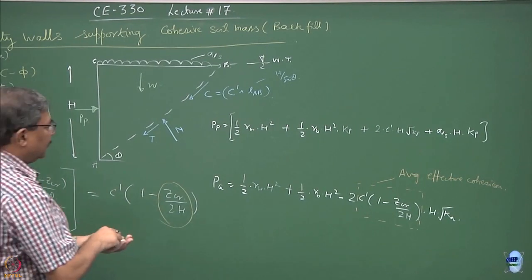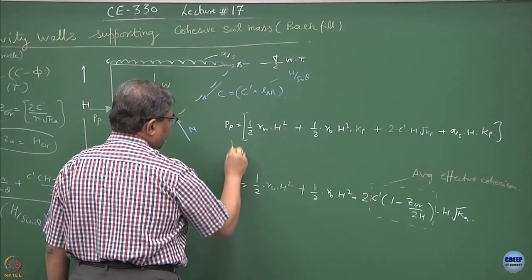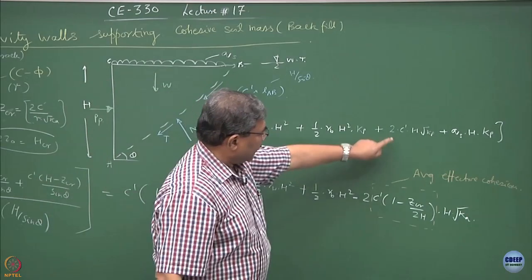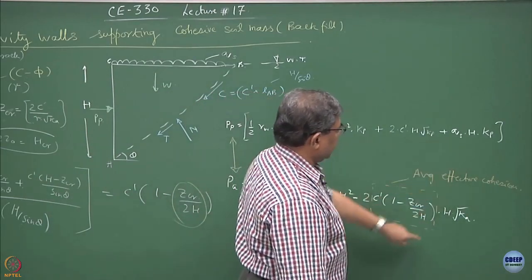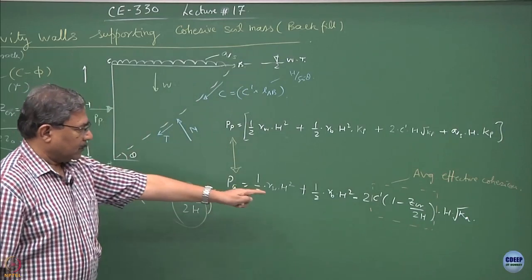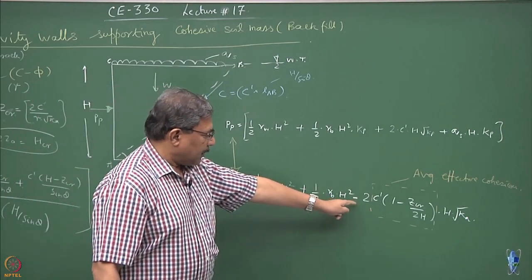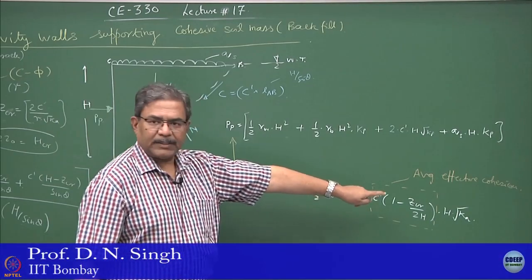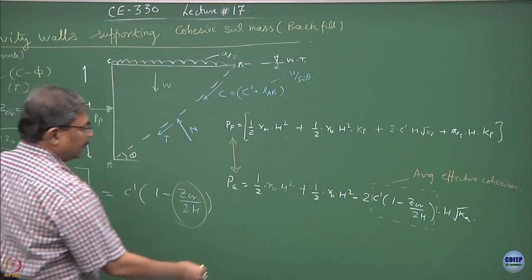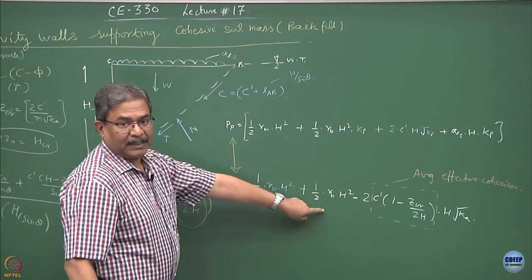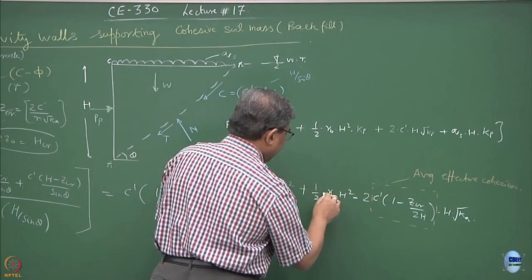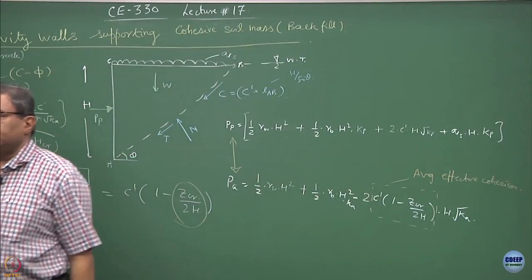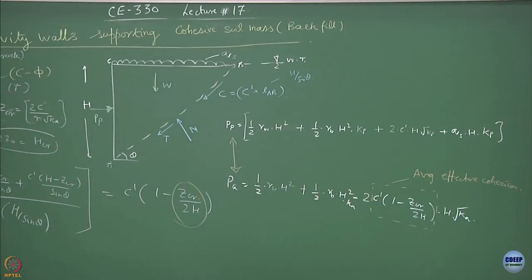Similarly, you try to find out the Pp also, so there is no difference. I think you can just substitute the terms accordingly and you will see that most of the parameters remain same in this expression and we can obtain Pp also. So this will become plus 2c prime times 1 minus Zcr upon 2h into h into root of kp and then these terms will also, we have done a mistake over here, so this should have been ka, this will also become kp.